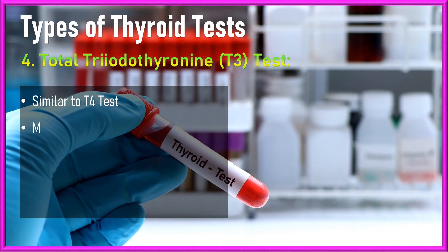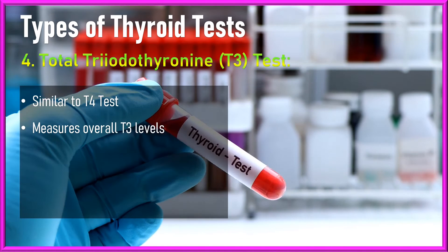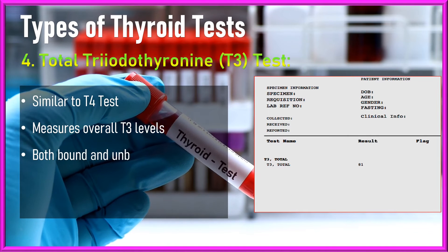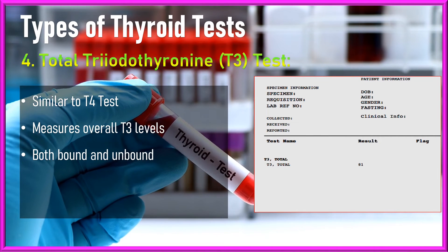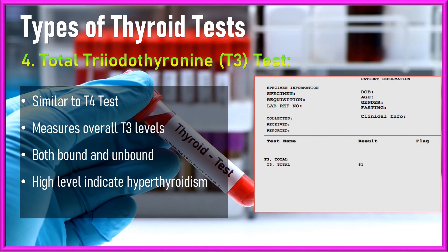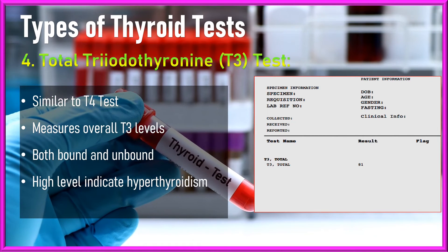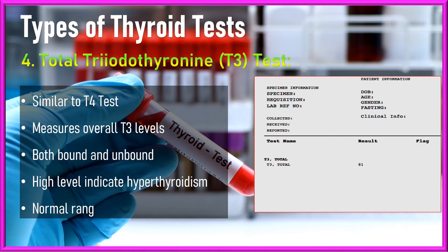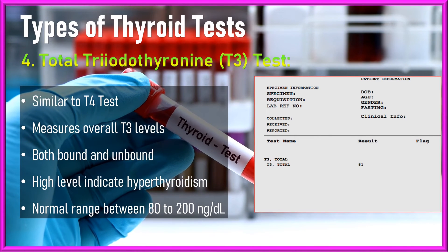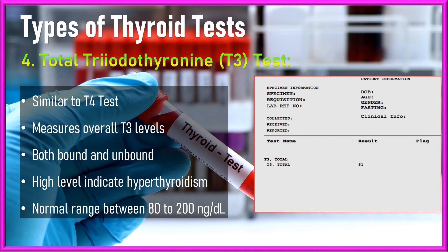Number four, the total triiodothyronine test, or T3 test. Similar to the total T4 test, this test measures the overall T3 levels including both bound and unbound forms. Elevated total T3 levels may be seen in hyperthyroidism. The normal total T3 levels are around 80 to 200 nanograms per deciliter.